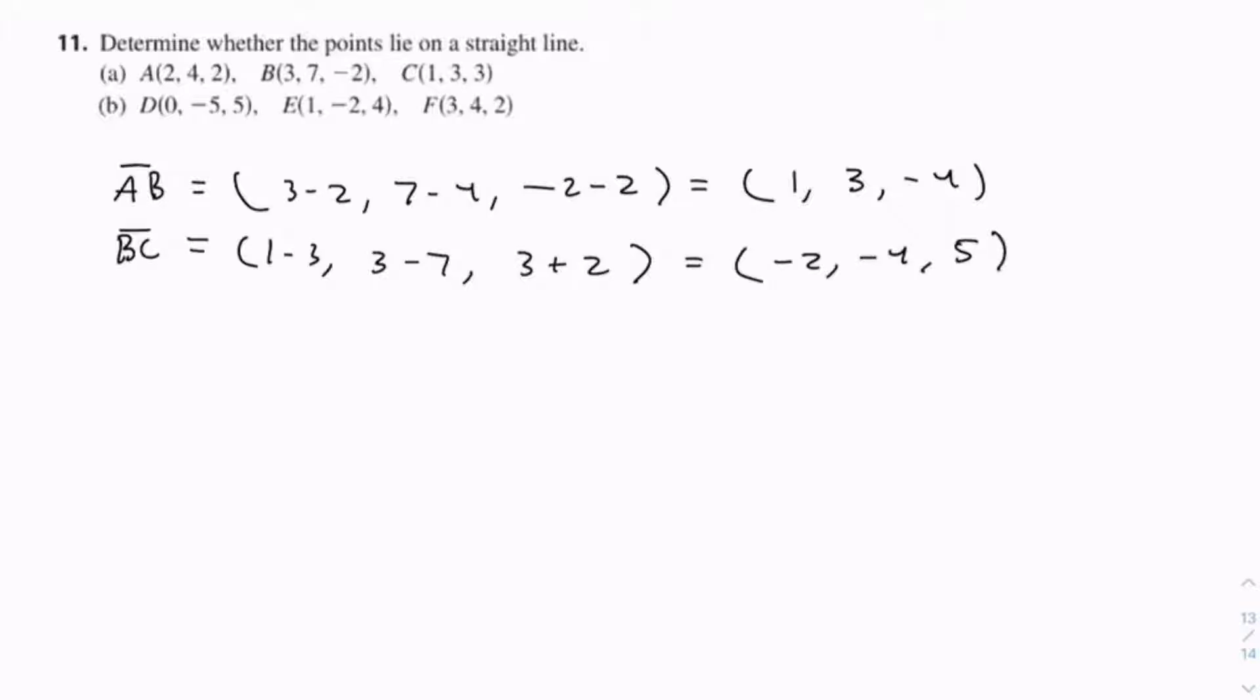So it's already clear that there's no scalar multiple. Because to get to 1 and negative 2, you've got to multiply by negative 2. To get to negative 4 and 4, that's negative 4 thirds. And these aren't common, so you can say that these points don't lie on a straight line.